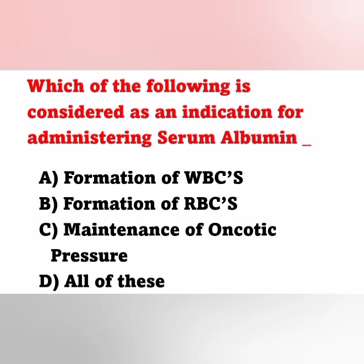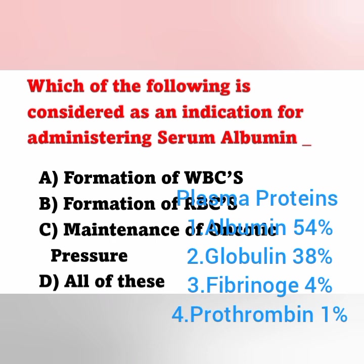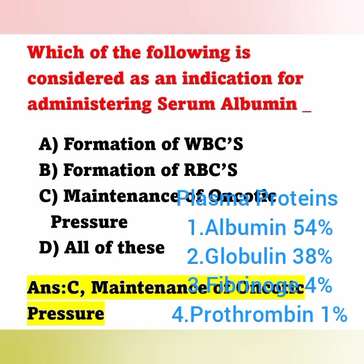First question: which of the following is considered an indicator for administering serum albumin? Option A: formation of WBCs. Option B: formation of RBCs. Option C: maintenance of oncotic pressure. Option D: all of these. Albumin is a plasma protein — along with globulin, fibrinogen, and prothrombin — and plasma proteins maintain oncotic pressure. So serum albumin is administered to maintain oncotic pressure. Option C is the correct answer.